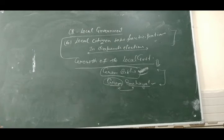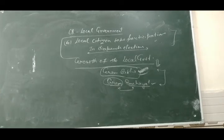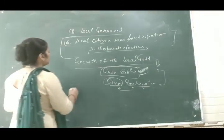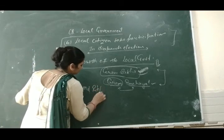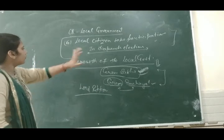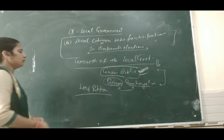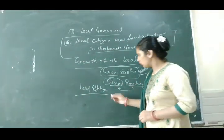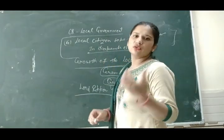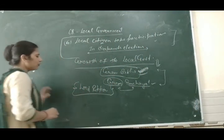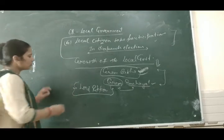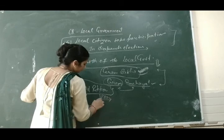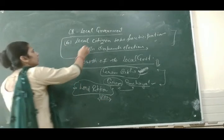In modern times, elected local government bodies were created after 1882. Lord Rippon, who was the Viceroy of India at the time, took the initiative in creating these bodies. Lord Rippon played an important role in the creation of local bodies. In 1882, Lord Rippon gave permission to make Gram Panchayats and gave some powers to the oldest people of the village who could take decisions on behalf of the community.